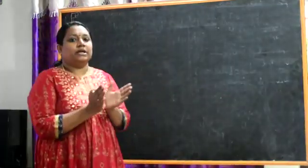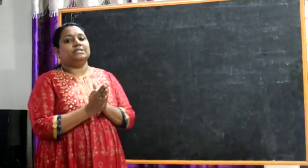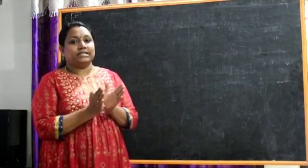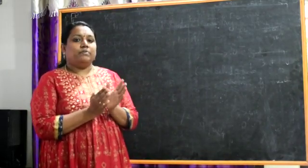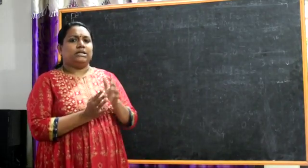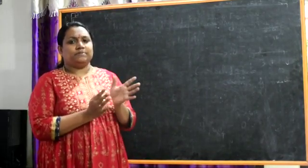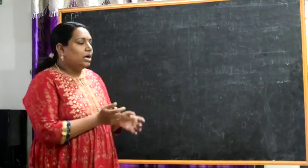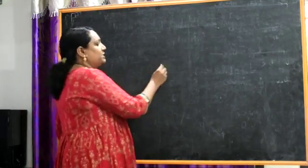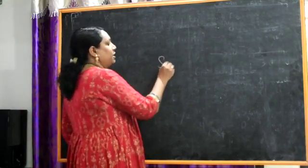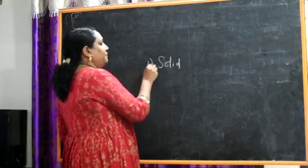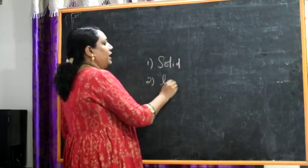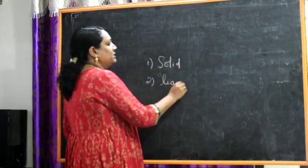We will start with different states of matter. There are 3 states of matter. Any substance can exist in any of these 3 different states. The first one is solid, the second one is liquid, and the third one is gas.